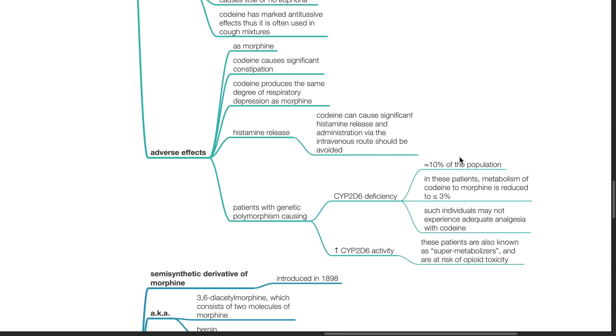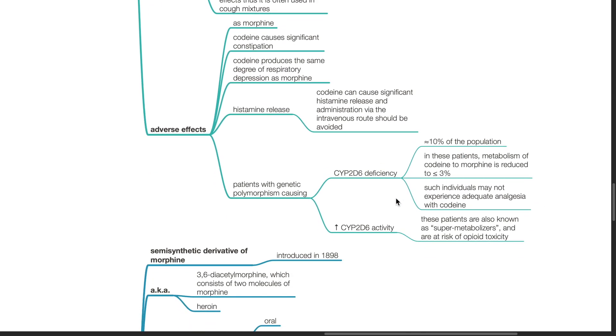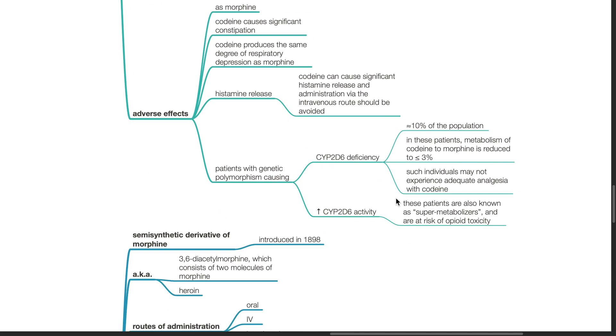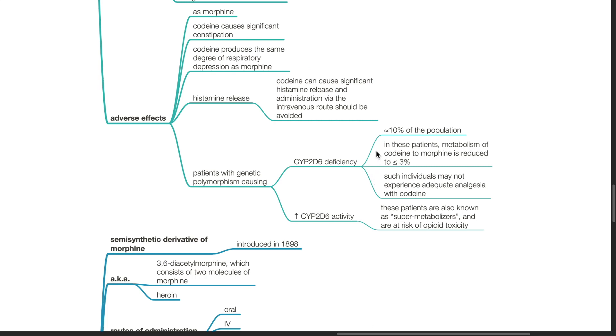Patients with genetic polymorphism. In patients with CYP2D6 deficiency, consisting of 10% of the population, metabolism of codeine to morphine is reduced to 3% or less. Such individuals may not experience adequate analgesia with codeine. Patients with increased CYP2D6 activity are known as super metabolizers and are at risk of increased opiate toxicity.